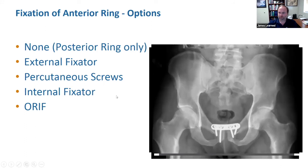And then there's the classic open reduction and internal fixation — reducing the anterior pelvic ring and plating it in compression to maintain the anatomy of the pelvic ring. There are lots of different options for fixation.